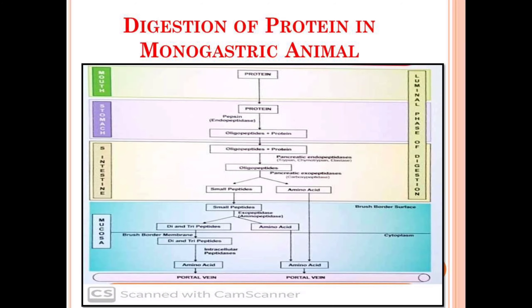In simple terms: the animal is fed a protein-rich diet, which moves to the stomach. Under the action of pepsin it is converted into oligopeptides. Then in the small intestine, pancreatic endopeptidases come into action and convert the rest of the protein into oligopeptides, so the entire protein is converted into oligopeptides.